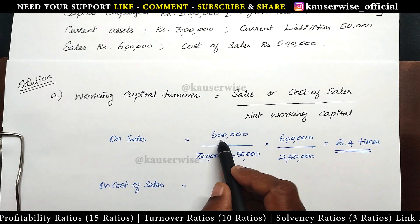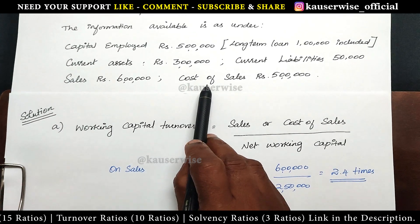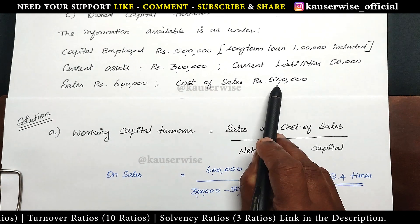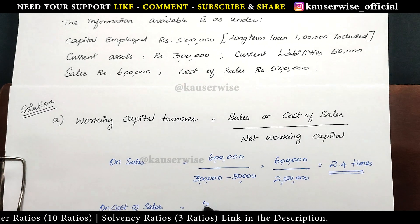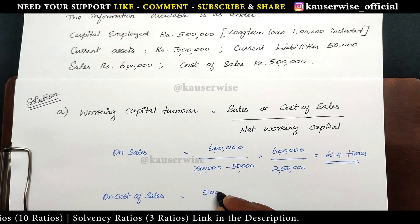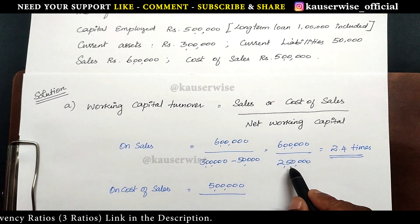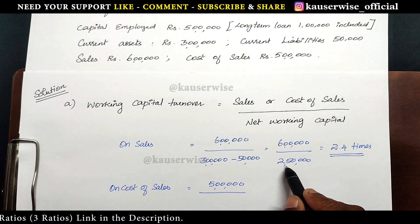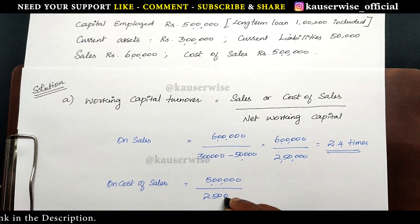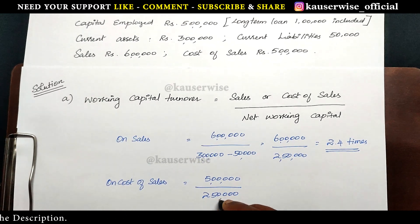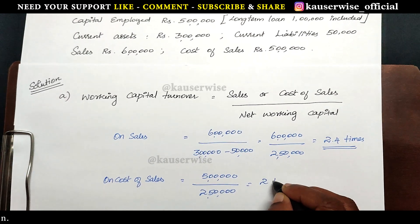Instead of sales we are going to consider cost of sales. Cost of sales is 5 lakhs. So, 5 lakhs divided by working capital 2 lakhs 50,000. The answer is 2 times.